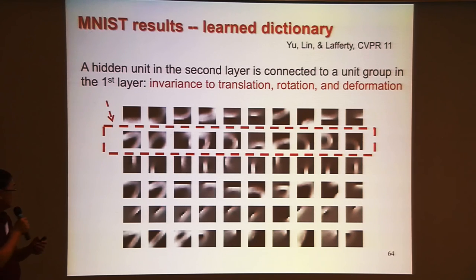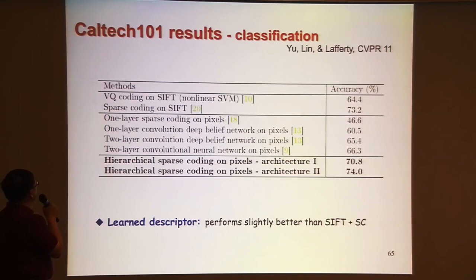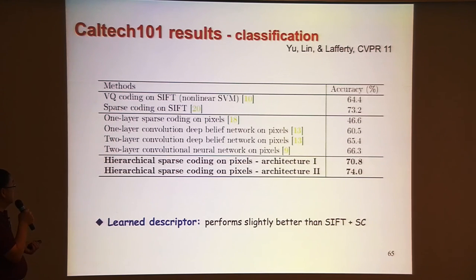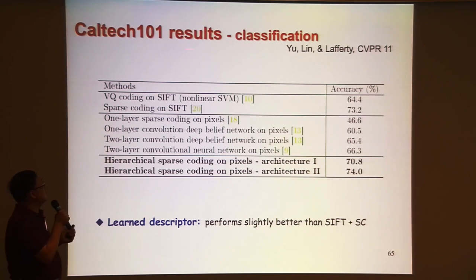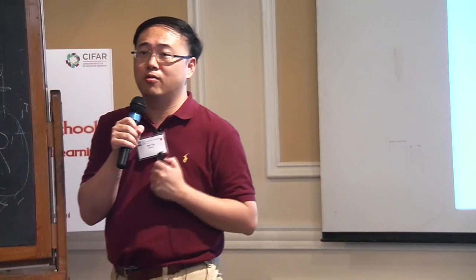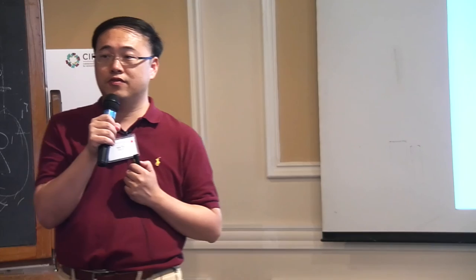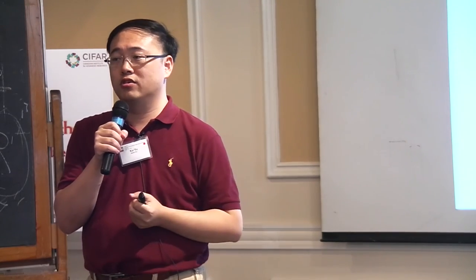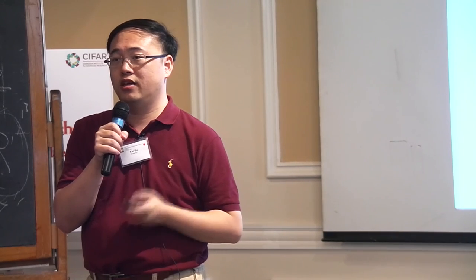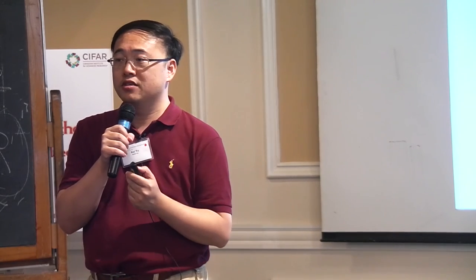On Caltech 101, when this paper was published, it was the first result showing that a deep learning model built upon raw pixels could beat all models using handcrafted features like SIFT. But now people have achieved better performance using deeper models on this benchmark. Here's another example of hierarchical sparse coding with a similar story: one higher-layer basis indicates similar types of patterns with different variations, so going to upper layers gives you more invariant but still discriminative features.